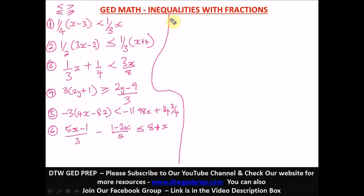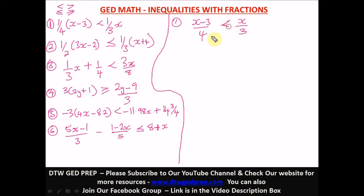So one over four times (x minus three) is the same as (x minus three) over four, which also means x over three. From here we can cross multiply: three will multiply the left side and four will multiply x. Don't forget your less than sign. So we have three in parentheses (x minus three) less than four times x.